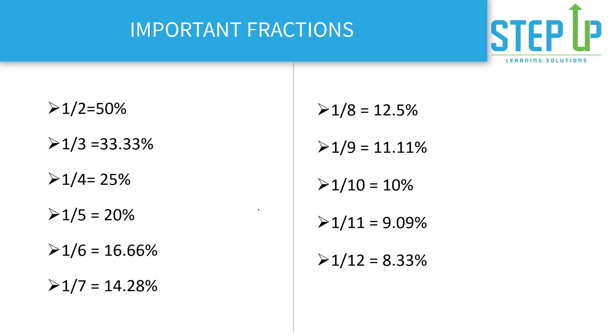One by two is fifty percent. One by three is thirty three point three three percent. I think some of these terms we would know. What we may want to focus here is look at a few more terms like sixteen point six six, fourteen point two eight, nine point zero nine, eight point three three. And if we want to save considerable amount of time in the exam, we should learn these.